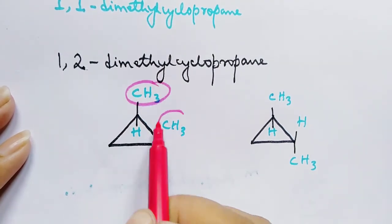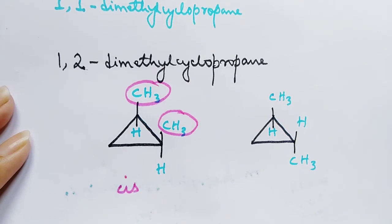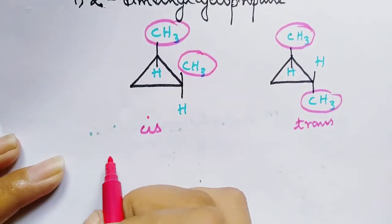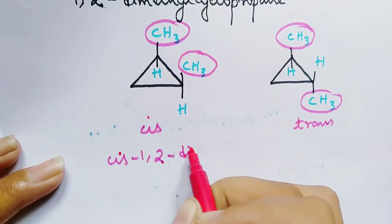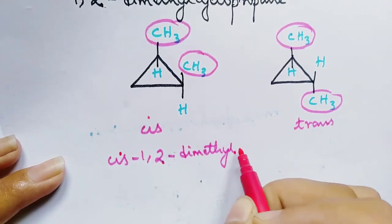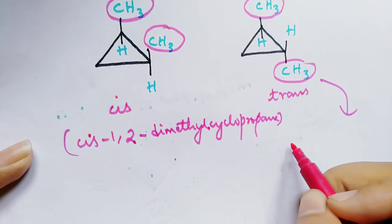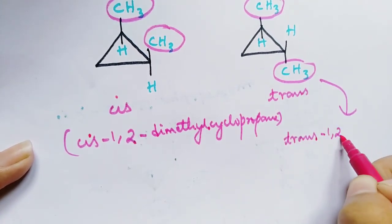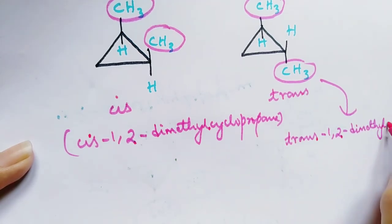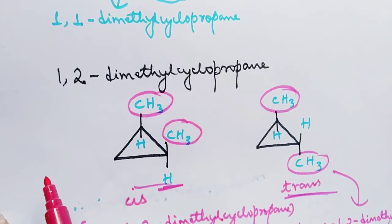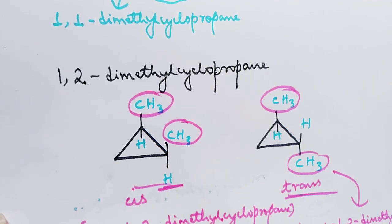If the similar groups are on the same side of the ring, this is the cis form. If the similar groups are on the opposite side of the ring, then it is the trans form. So this one is cis-1,2-dimethylcyclopropane, and this one is trans-1,2-dimethylcyclopropane. These two are the isomeric forms of 1,2-dimethylcyclopropane.